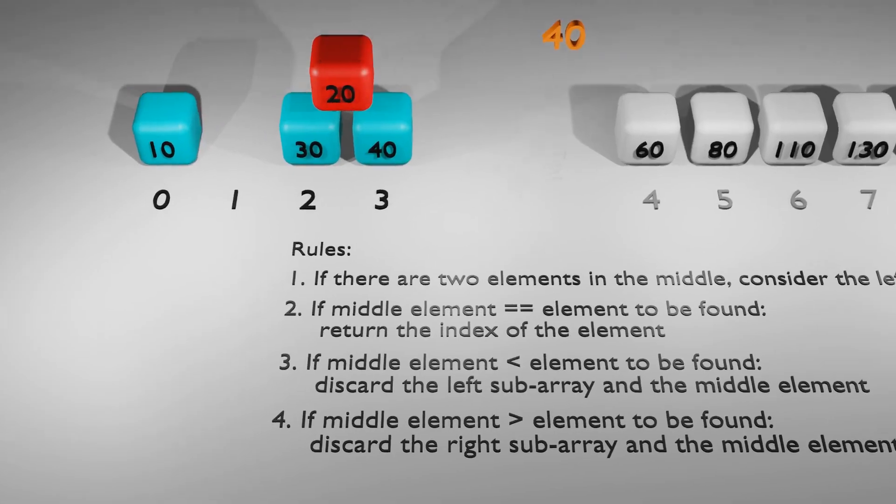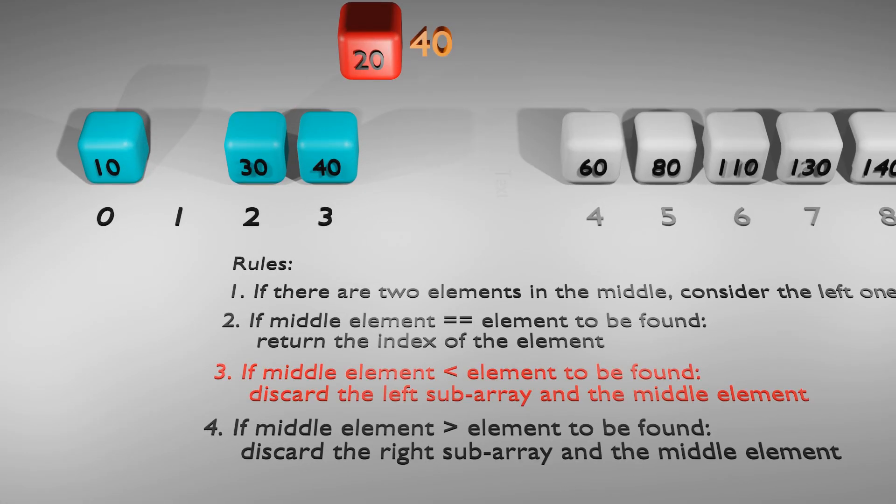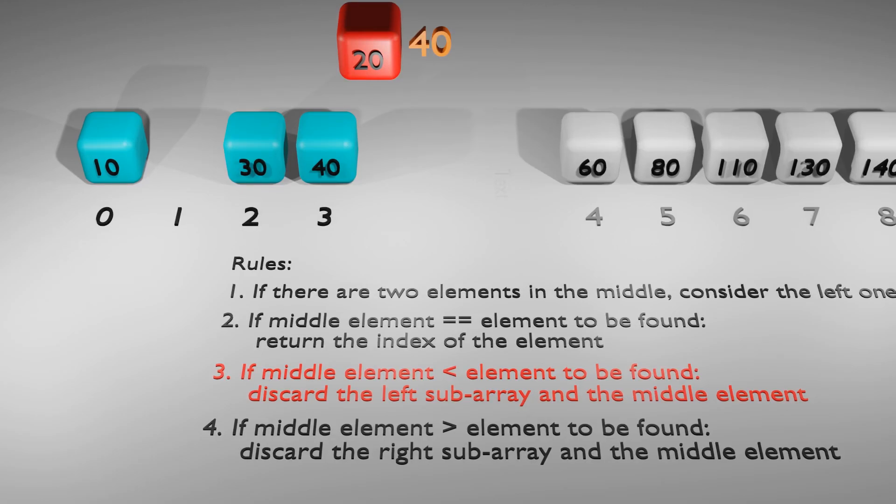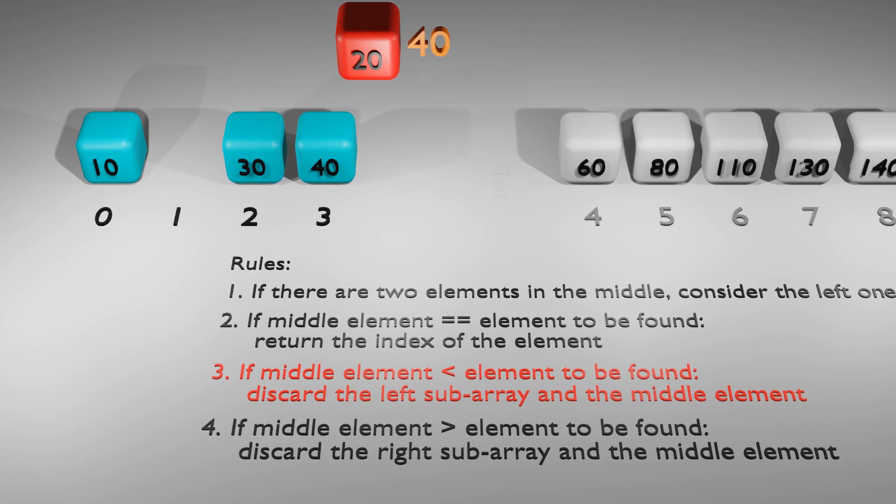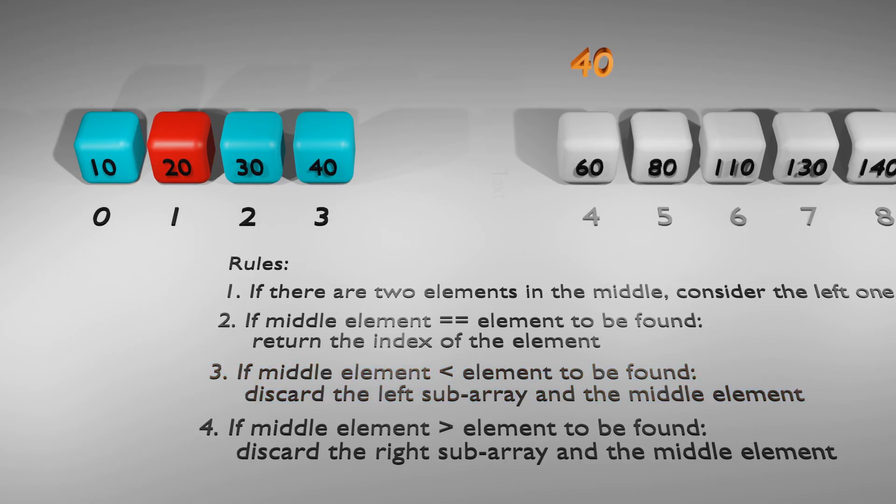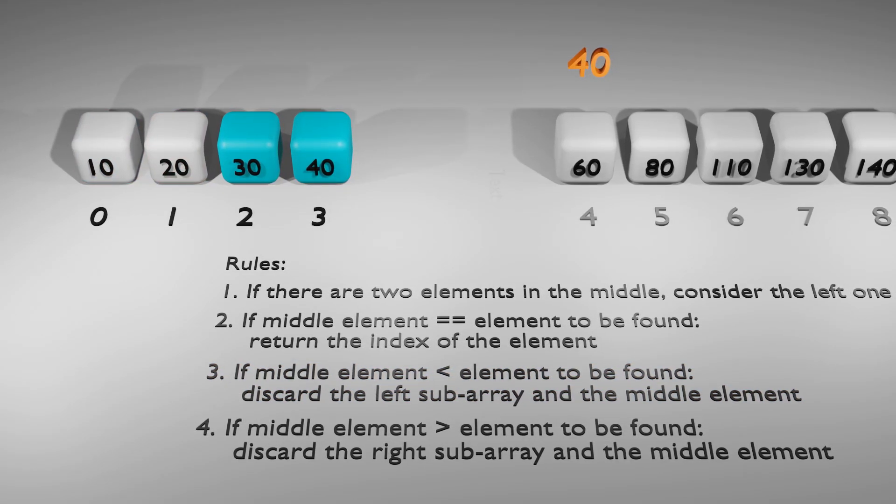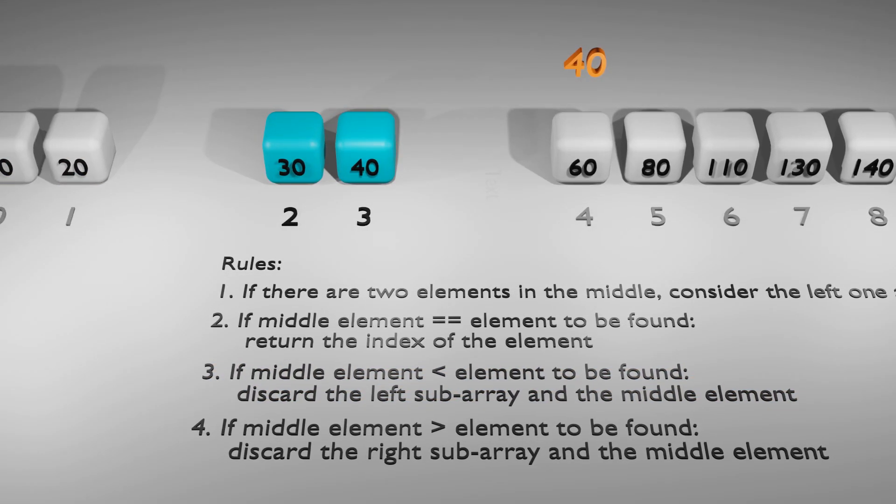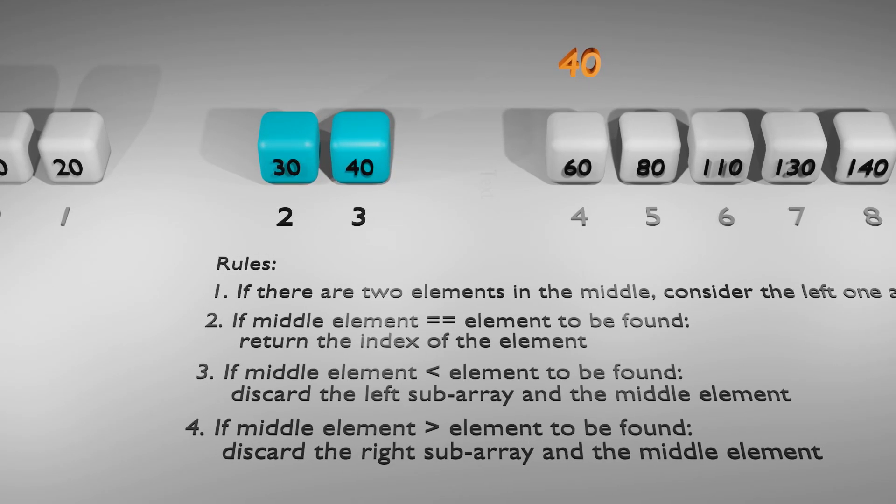Therefore, 20 becomes the middle element and is compared with 40. Since 20 is less than 40, according to rule number three, we choose the right sub array. We discard the middle element 20 and any element to the left of it, which is 10 in this case.